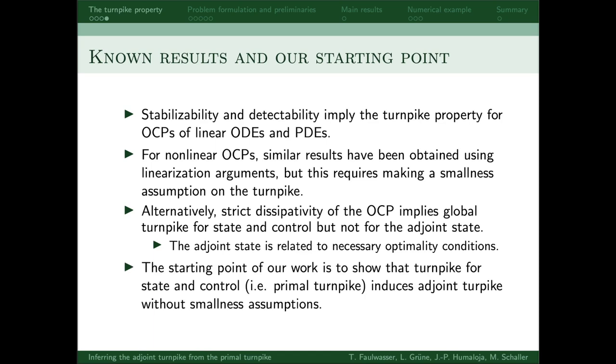So the starting point of our work is to show that the turnpike property on the state and control, which is the primal turnpike, implies the turnpike property on the adjoint without making smallness assumptions. That is, we assume that the OCP has the primal turnpike and try to show the adjoint turnpike.